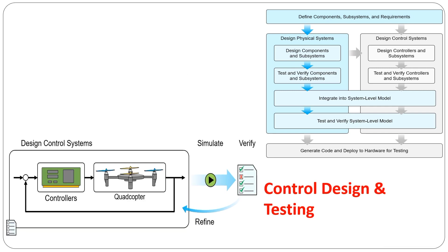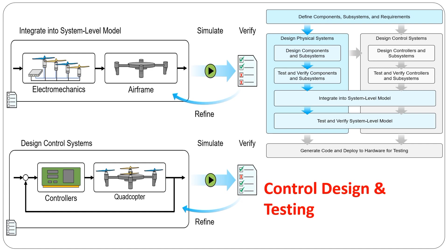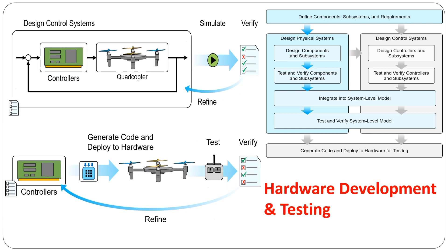Control design and testing: with our physical design finished, we could then develop a control system to fly the quadcopter. We could design closed-loop controllers to maneuver the quadcopter to specific positions, then implement supervisory controllers to make the quadcopter perform specific missions and automatically land when the battery is low. Throughout this control design process, we would use simulation to test and verify that the controllers function correctly.